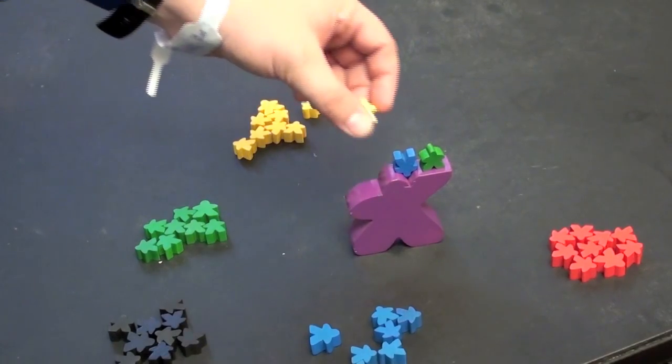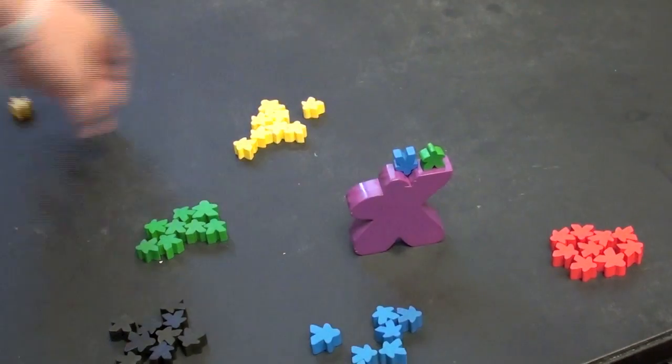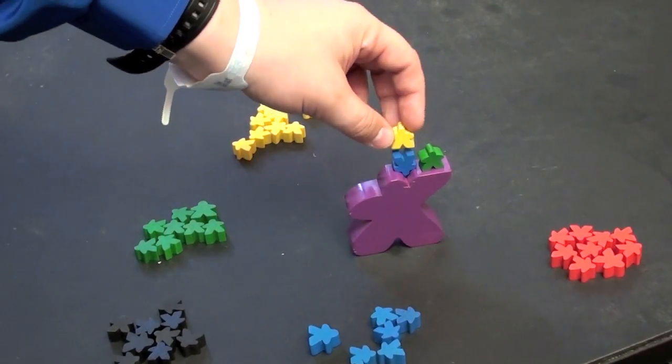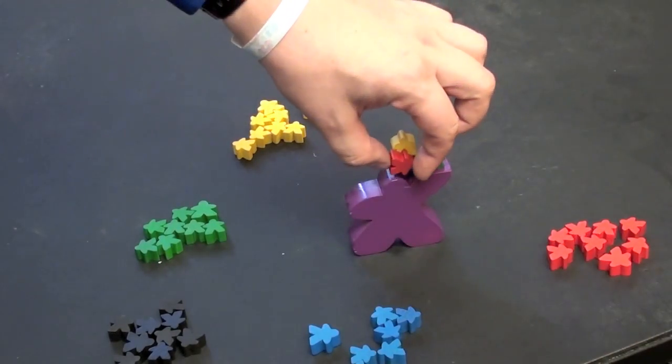And so you can see each player is going to continue to add these. If you ever make one or more of them fall off, then you take all the ones that fell off and put them in front of you.